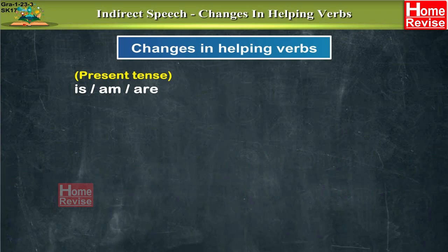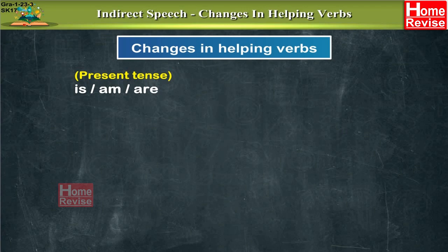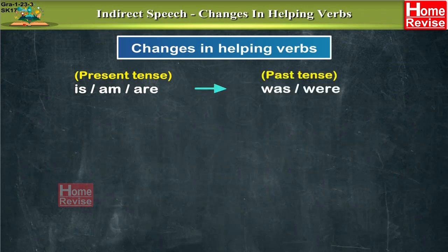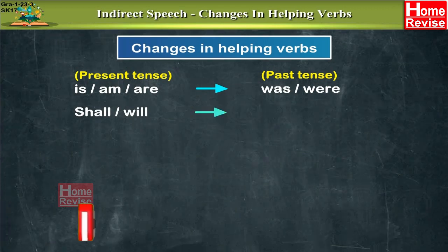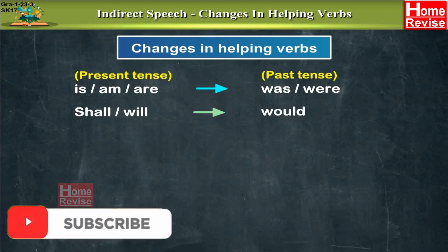The to-be verbs — is, am, are — are in the present tense. Remember, the present tense always changes into a past tense in indirect speech. So 'is', 'am', 'are' change into 'was' or 'were'. 'Shall' and 'will' change into 'would', which is the past tense form of 'will'.